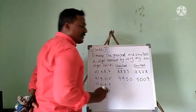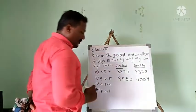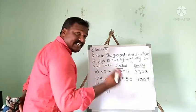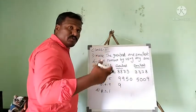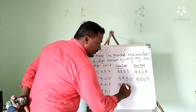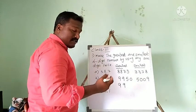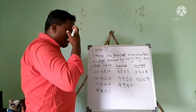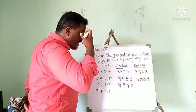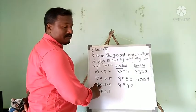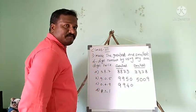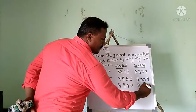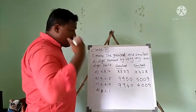Next example: digits 0, 4, 9. For the greatest number, descending order — 9 is the biggest, so write 9 two times, then 4, then 0. For the smallest number, 0 cannot go first, so we write 4 first, then 0 two times, then 9. So 4009 is the smallest four-digit number.